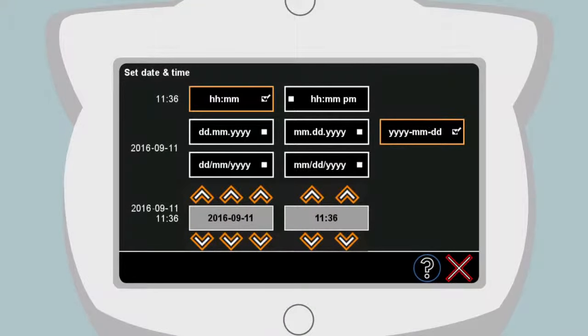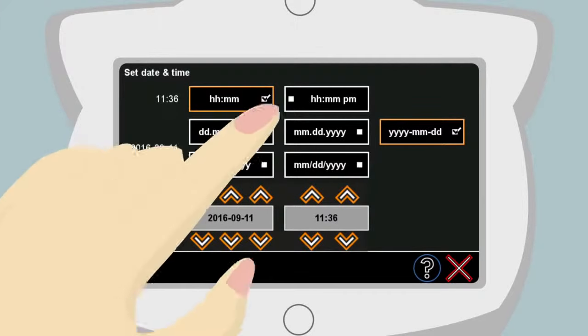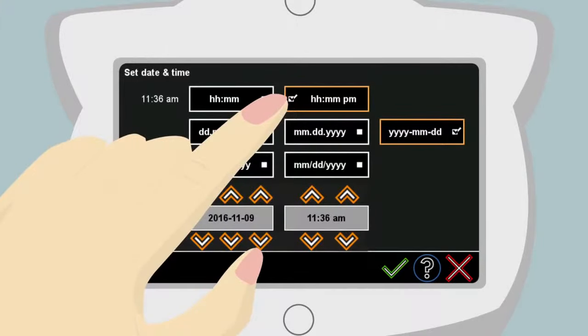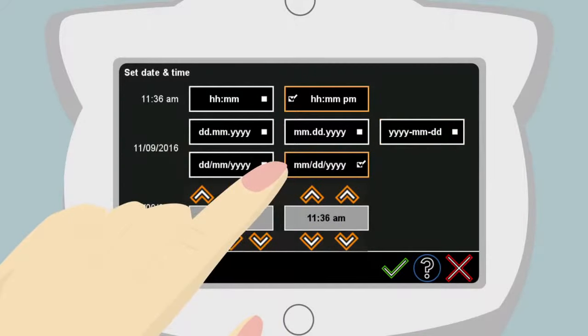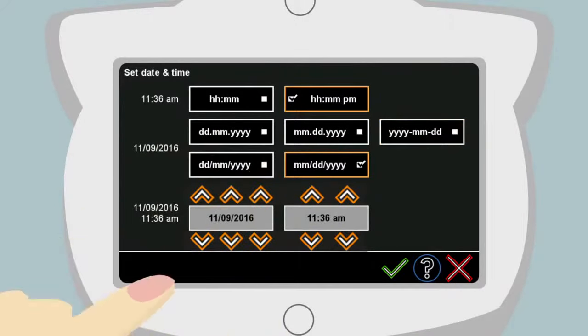The initial screen asks Anna to set the date and time. Here she simply touches the hour, minute, PM selection. Then she touches the month, slash, day, slash, year selection.